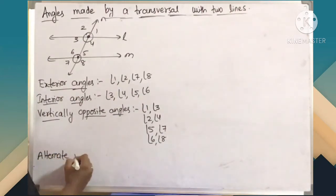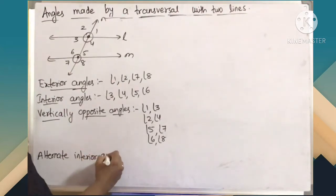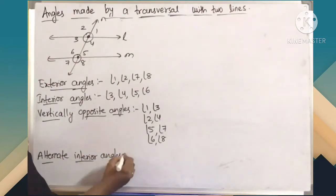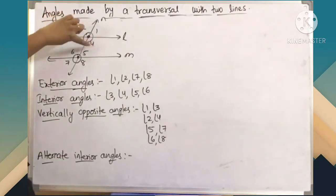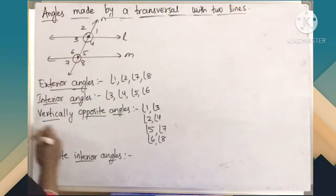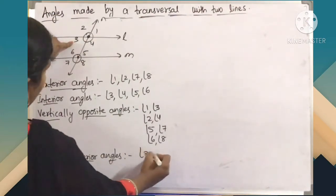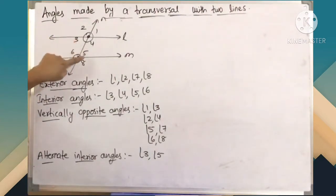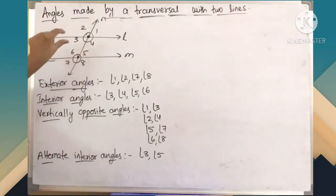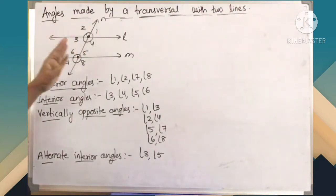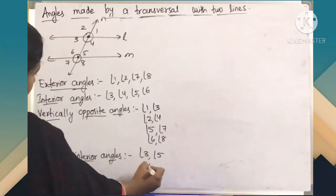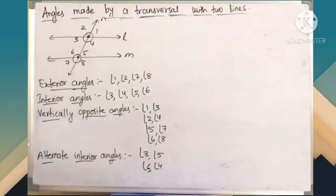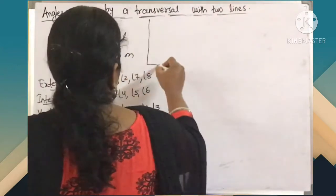Next, alternate interior angles. Both should be interior, they should not be adjacent, and they should be on either side of the transversal. Considering interior angles 3, 4, 5, 6: angle 3 and angle 5 are one pair of alternate interior angles, because they are not adjacent, they are interior, and angle 3 is on the left side of the transversal while angle 5 is on the right side. The other pair is angle 6 and angle 4. So totally we get 2 pairs of alternate interior angles.